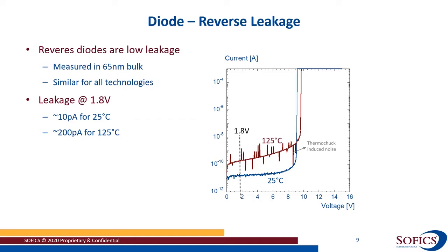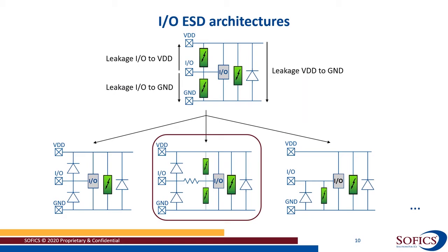When it comes to leakage, we have to look at the reverse diode, and leakage is really extremely low — on the order of 100 picoamps at room temperature, a bit higher at elevated temperatures but still very low. That is the leakage story for dual diode protection: at the IO itself, there is hardly any leakage — about 10 pA at 1.8V at 25°C, and a few hundred pA at 125°C.